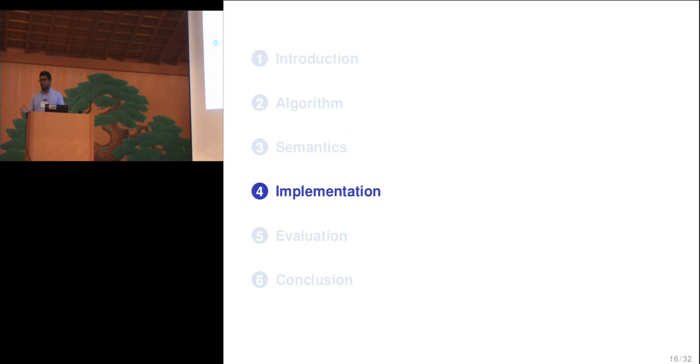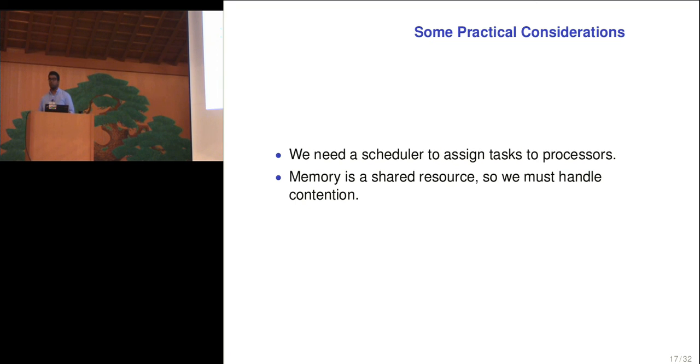So we talked about the semantics. We have hierarchical heaps. We have hierarchical collection. We've shown that it all works, but the goal of this paper was to have an efficient memory manager. So we need to see how this would work in implementation. However, in implementation, there are a couple of major practical considerations. The first one is that there needs to be a schedule of some sort that assigns tasks to processors. In addition, memory itself is a shared resource. We cannot just come up with new locations and new memory out of thin air. So we need to manage it in such a way to reduce the contention. In the remainder of this talk, I'm going to speak about how we address this first concern of a scheduler.